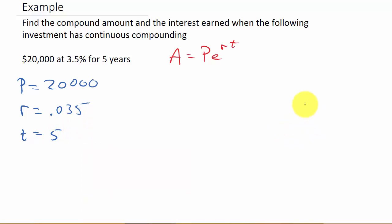So, let's just plug everything in. We get A equals P, which is 20,000, times E raised to the R, 0.035, times T, which is 5.